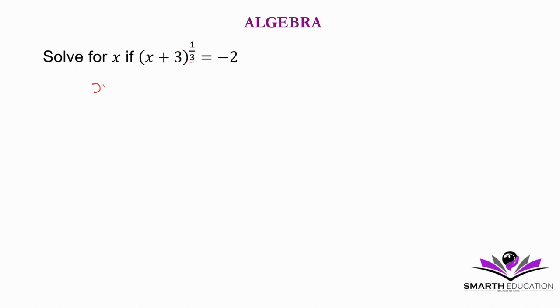So we'll say x plus 3 to the power 1 over 3 to the power 3 is equal to negative 2 to the power 3. Here we're raising a power to a power, so we say 1 over 3 times 3, which is 1, so we remain with x plus 3.